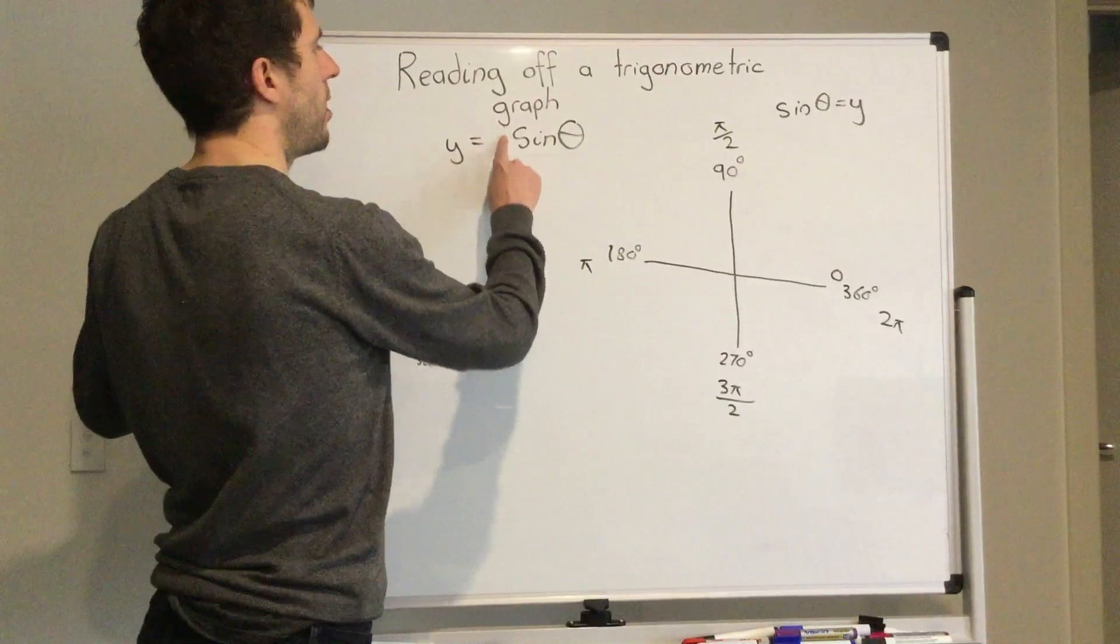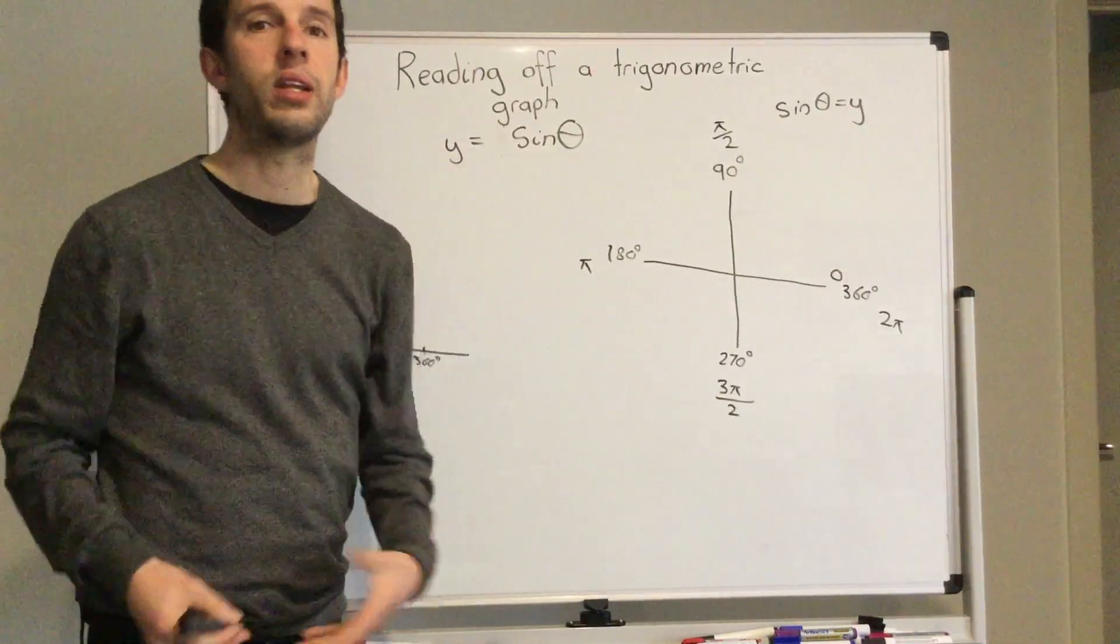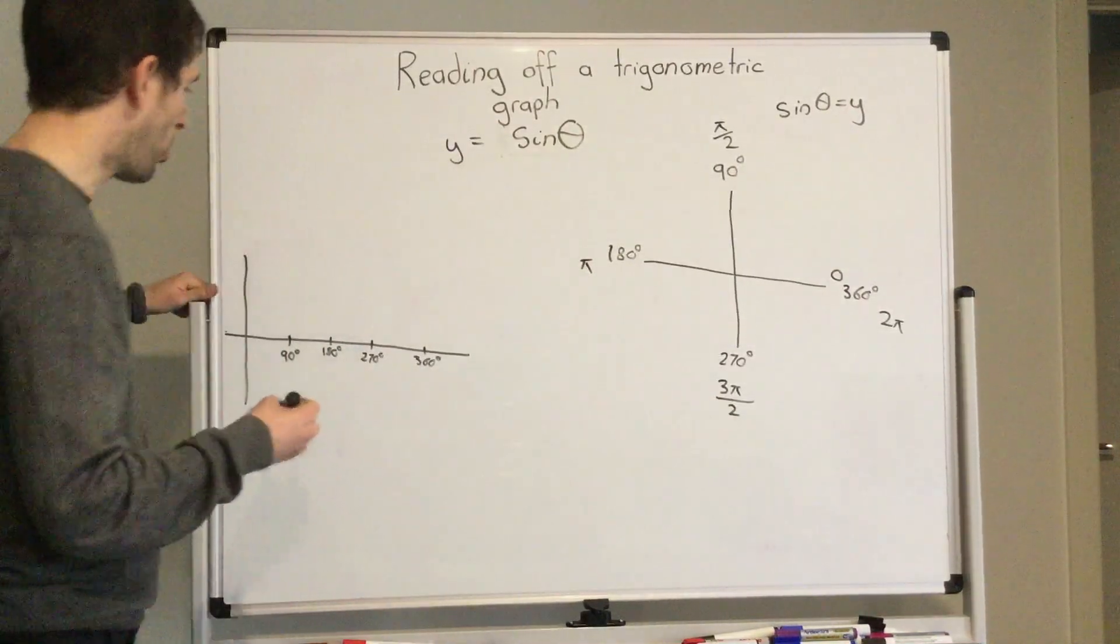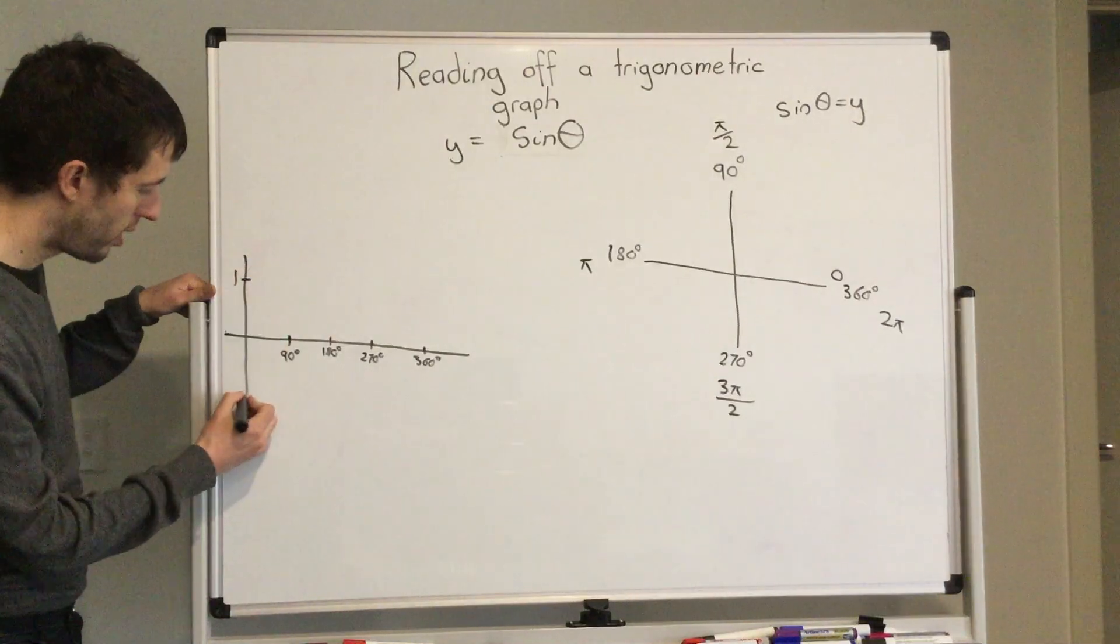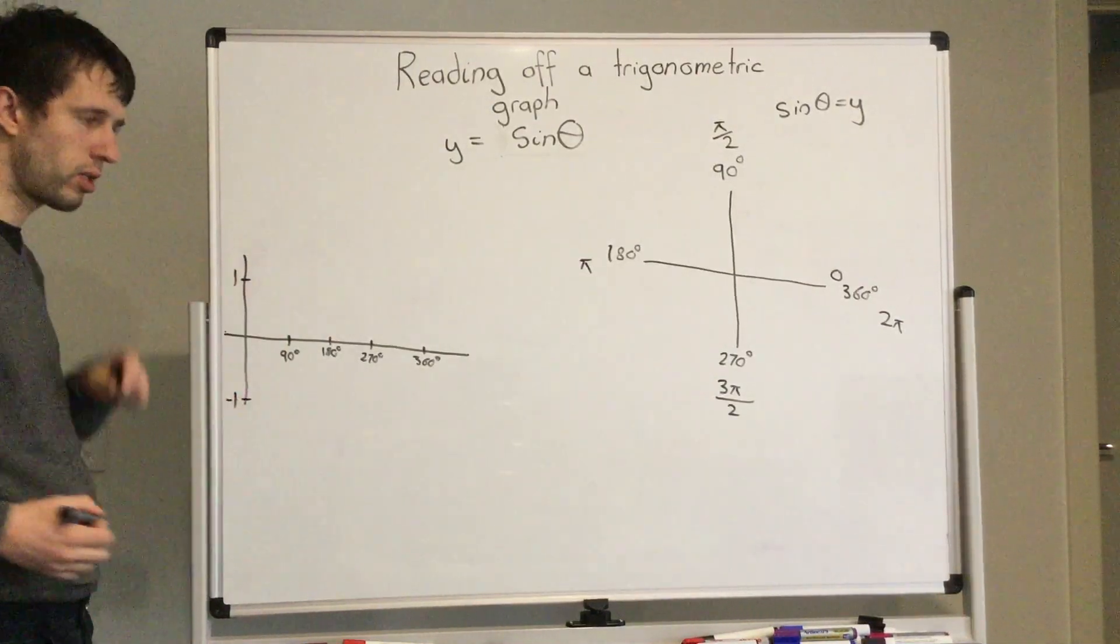But right now there's nothing there, so it's just one sine. That just means on our graph we've got one and we've got negative one.